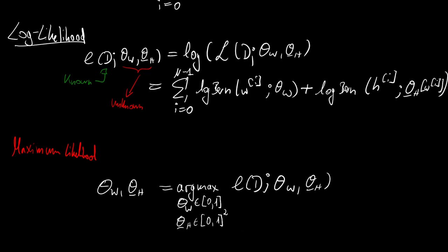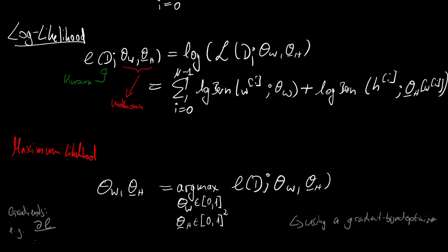We are going to do this using a gradient-based optimizer. The cool thing here is that we don't have to specify the gradients manually — we get them by automatic differentiation. The gradient is, for example, the derivative of the log likelihood with respect to sigma_W, and we get this by automatic differentiation, which is really handy.